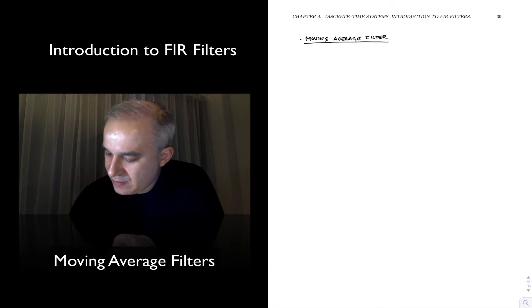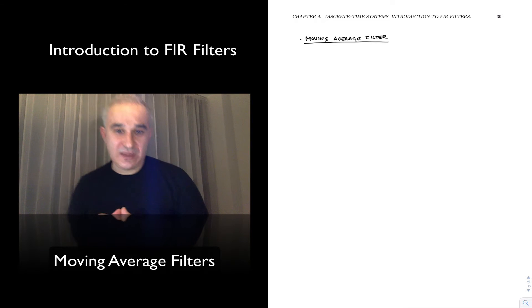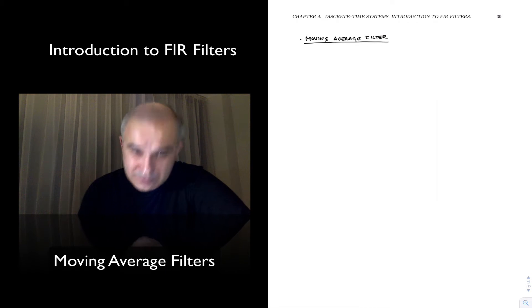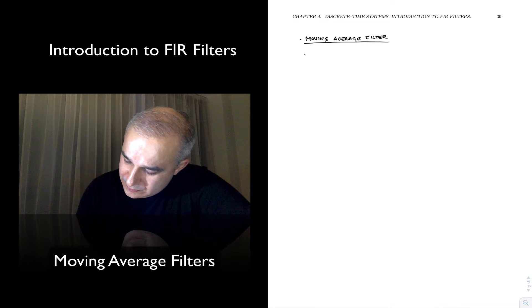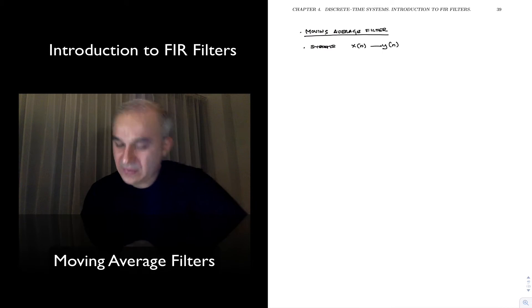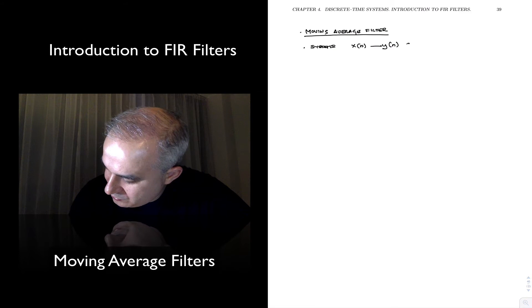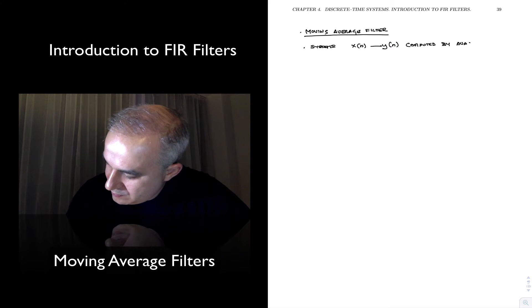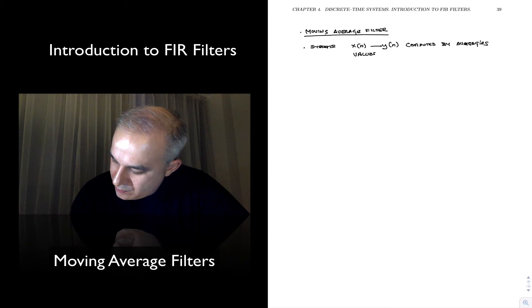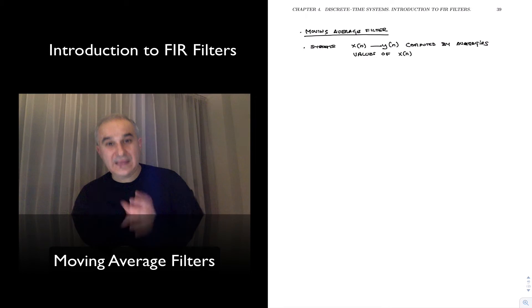The Moving Average filter is a special type of a more general type of filters, which are finite impulse response filters we are going to see shortly. We are thinking about a system as a transformation, an x of n to y of n transformation. In this case, this is a transformation computed by averaging values of x of n in a moving window.